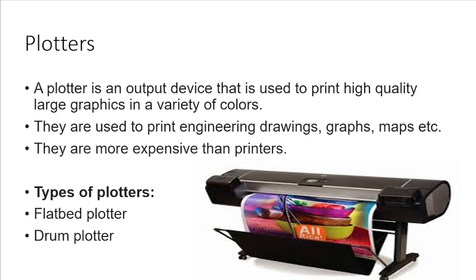A flatbed plotter is used to draw images on paper and it uses pens for drawing images. A drum plotter uses a rotating drum or cylinder, and the pens move left and right as the drum rotates. It is used to print large panoflexes.